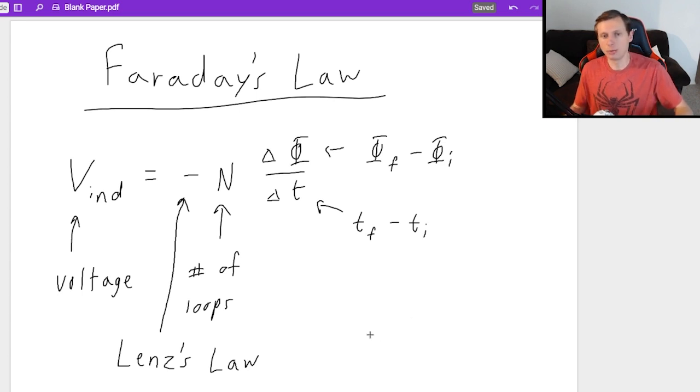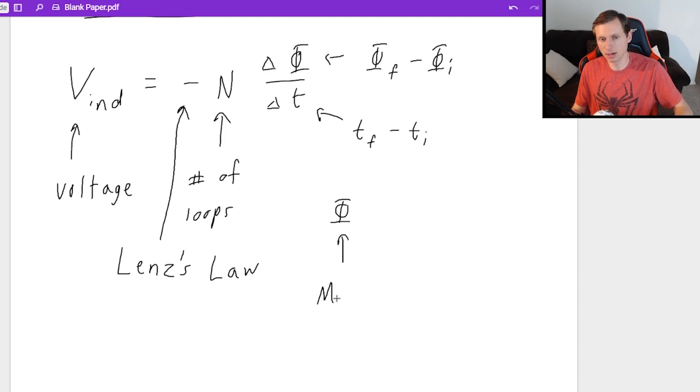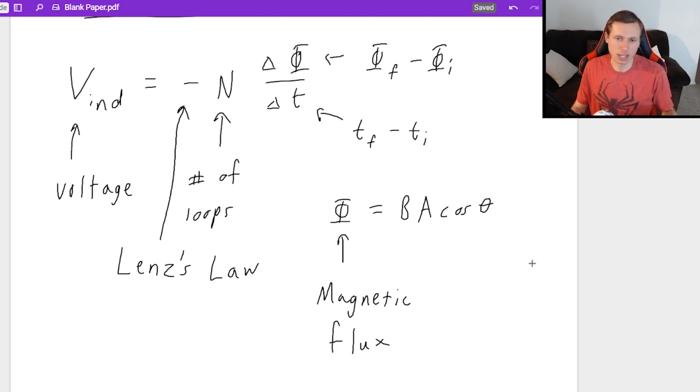And the only other thing I want to explain is that this is magnetic flux right here. That symbol right there, it's magnetic flux, which honestly I could probably do a whole video on magnetic flux, but I'm not going to right now. I'm just going to give you the equation. It's B, the magnetic field, times A, the area, times cosine theta, which most of the time you can ignore because they don't give you an angle like 99% of the time.